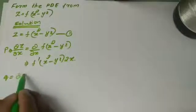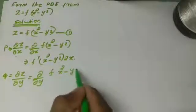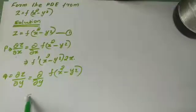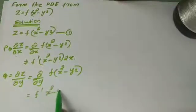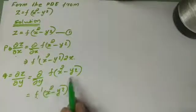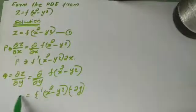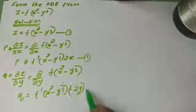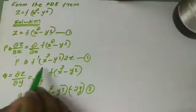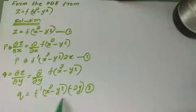Now differentiating with respect to Y: Q equal to dou Z by dou Y equal to dou by dou Y of f of x square minus y square, which gives f dash of x square minus y square into minus 2y. So we have two equations: P equal to f prime of x square minus y square into 2x, and Q equal to f prime of x square minus y square into minus 2y.